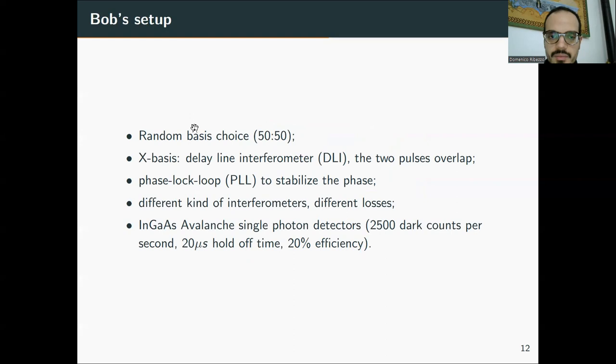The basis choice is 50-50 for Bob. Since we have different kinds of interferometer, we have different losses. We use the best interferometer, the least loss interferometer in the link showing more attenuation. The single photon detectors showed around 2,500 dark counts per second and were set to 20 microseconds of hold-off time and 20% of quantum efficiency.